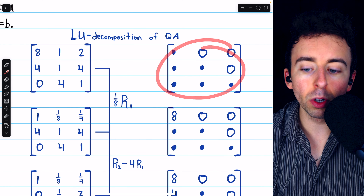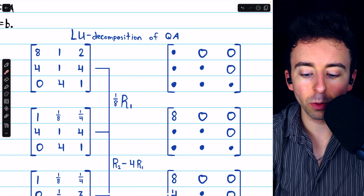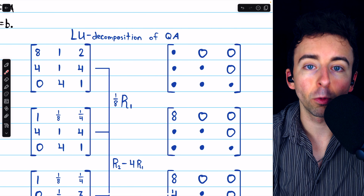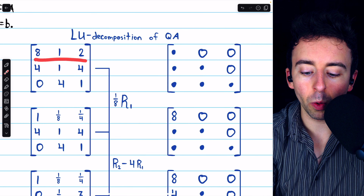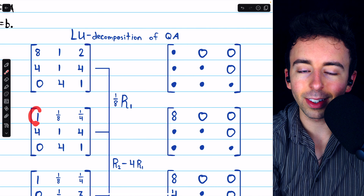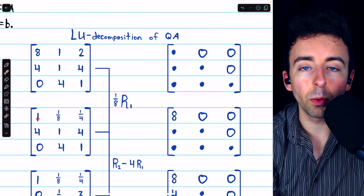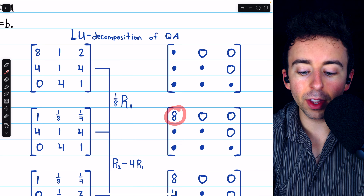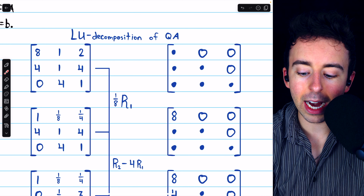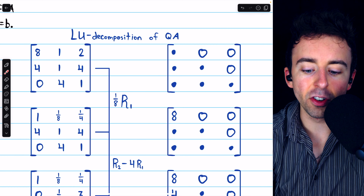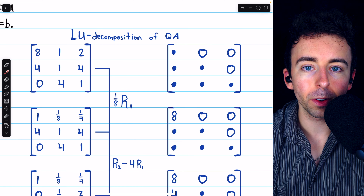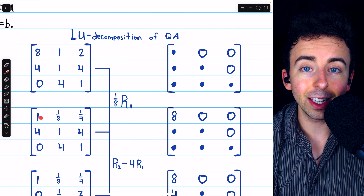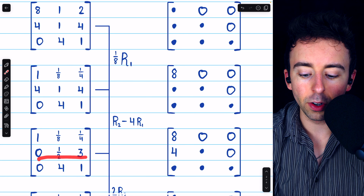On the right, we're going to make suitable changes to this lower triangular matrix to reflect the row operations that we completed, and in total we will construct L on the right column. The first thing we do is multiply row 1 by 1/8 in order to introduce this leading 1. In the position where the leading 1 was introduced in the matrix L, we need to put the reciprocal of the scalar we multiplied by. The reciprocal of 1/8 is 8. We then need to subtract four copies of row 1 from row 2 in order to get a 0 below that leading 1, giving us this new row 2.